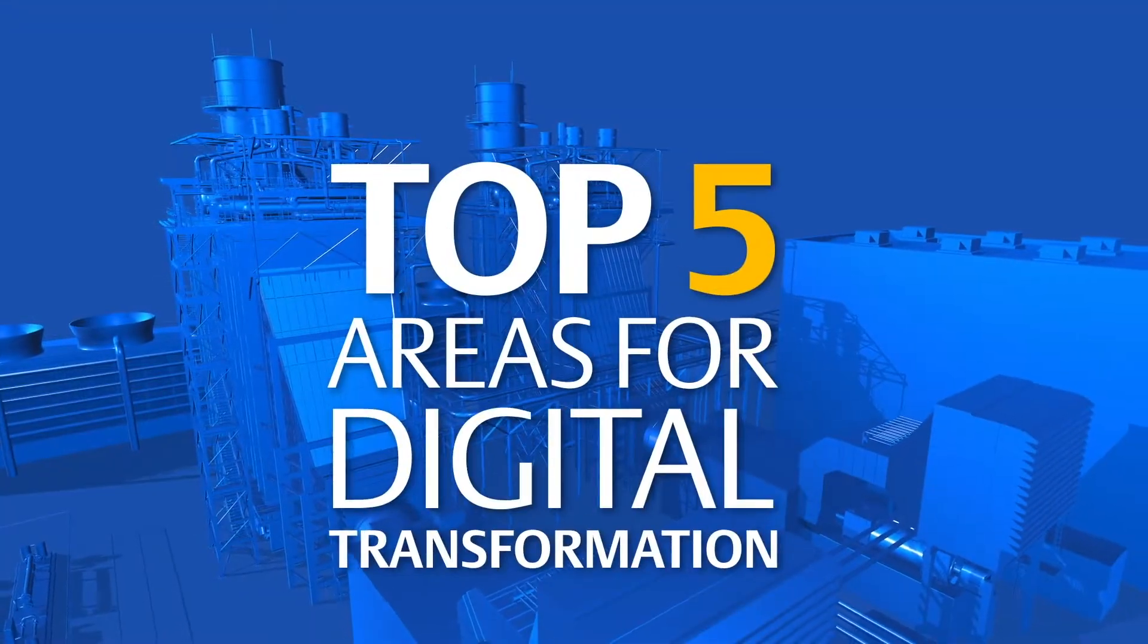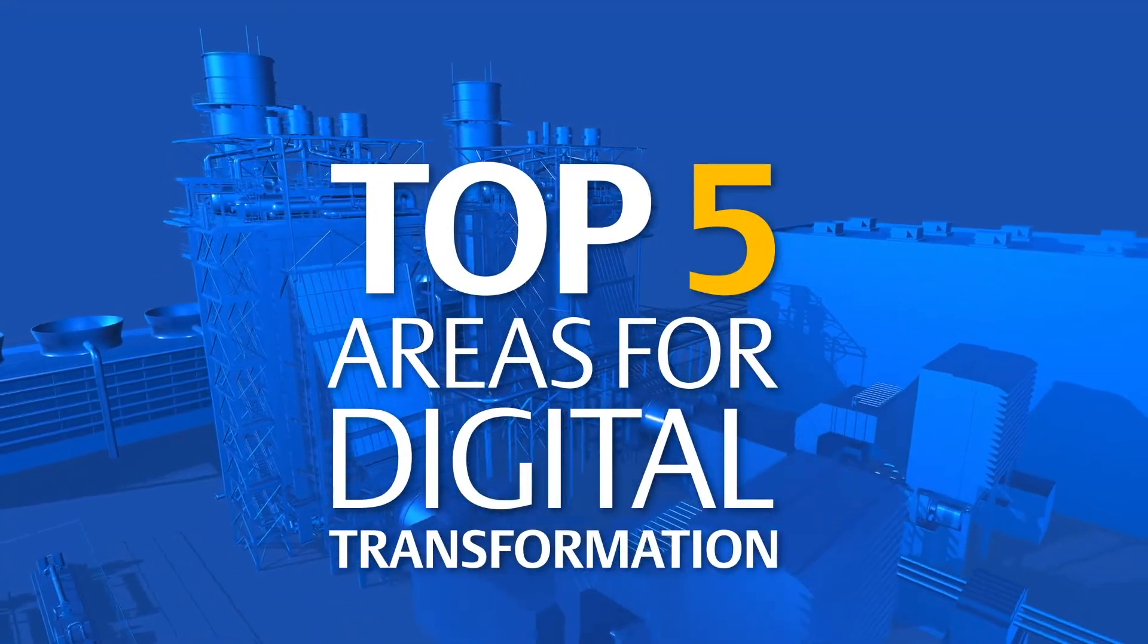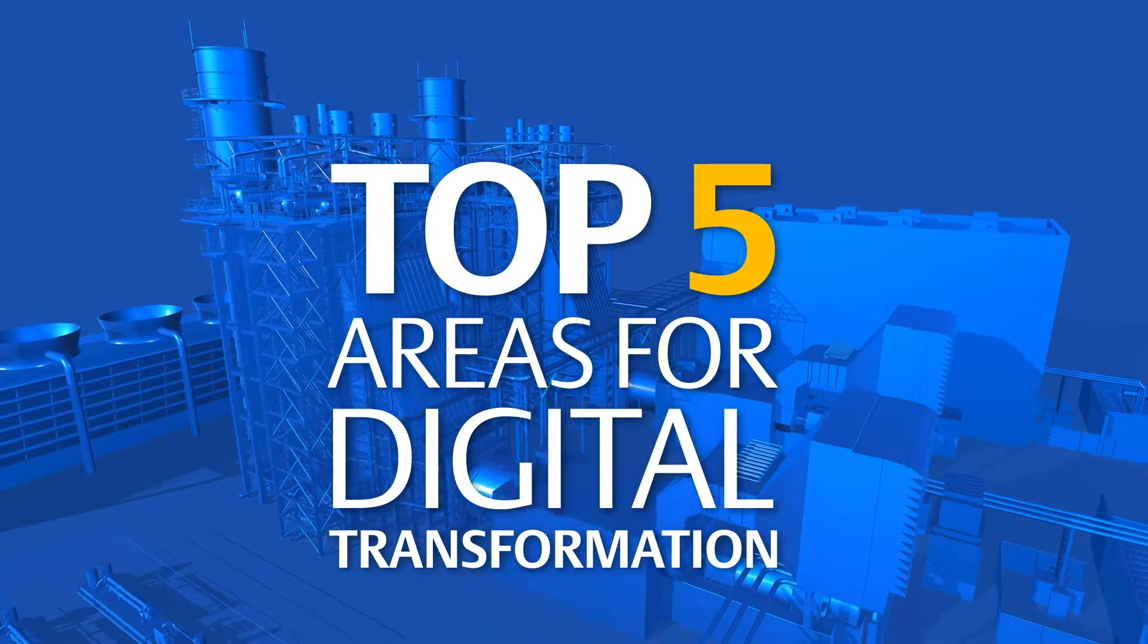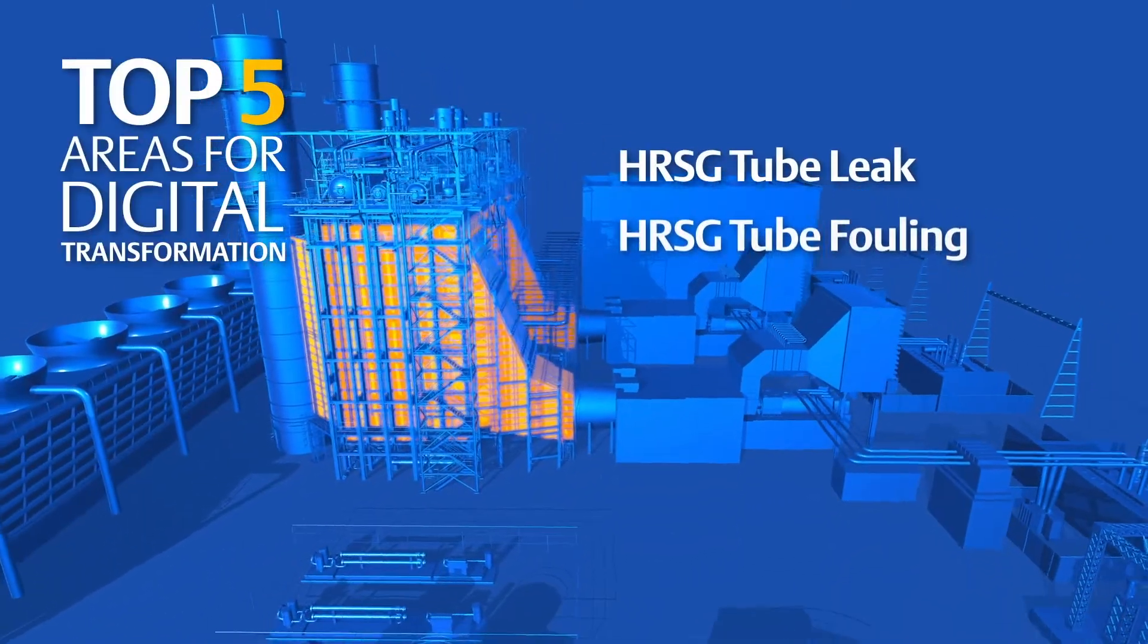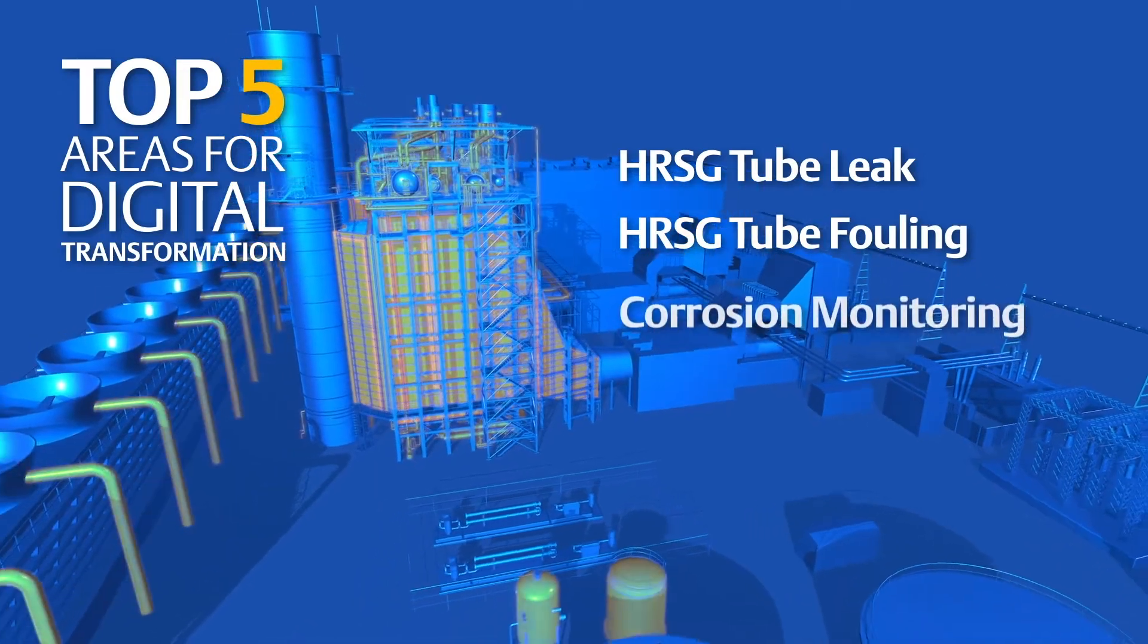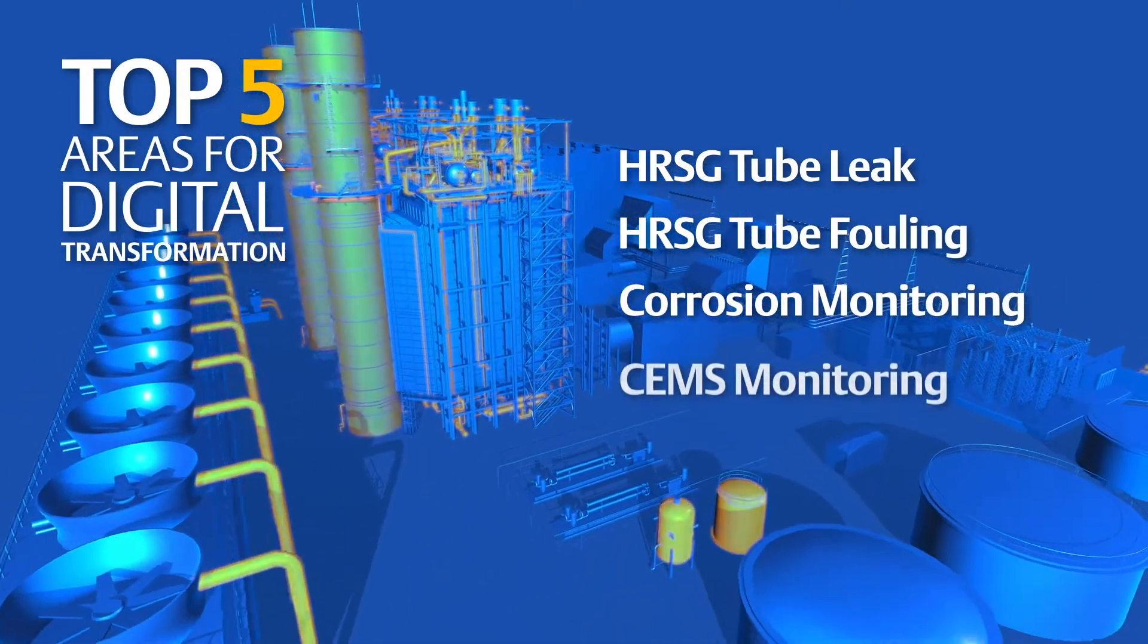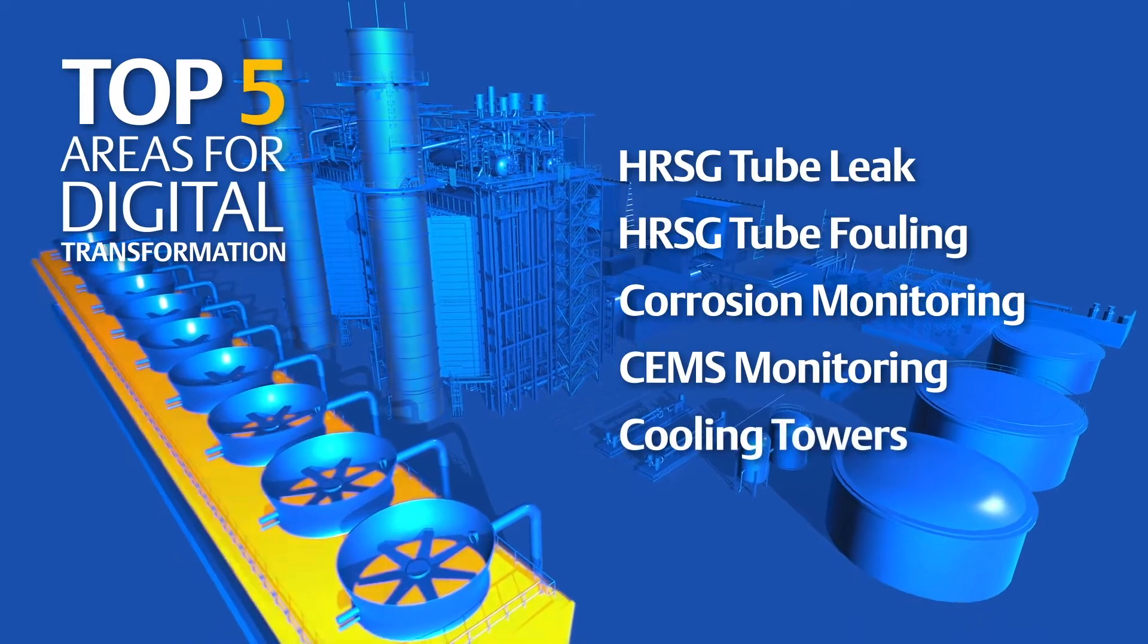Here are the top five areas in which industry leaders are realizing digital transformation in their combined cycle plants: HRSG tube leaks, HRSG tube fouling, corrosion monitoring, continuous emissions monitoring, and cooling towers.